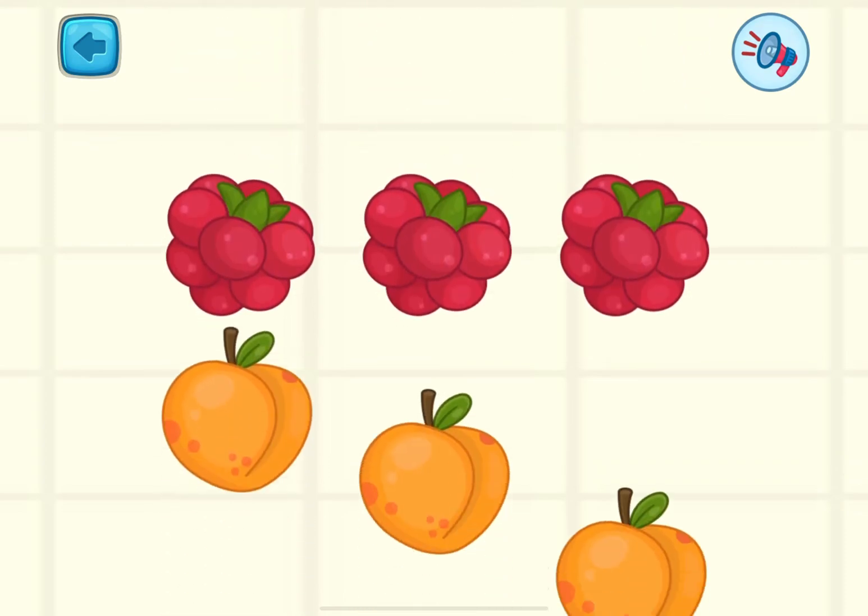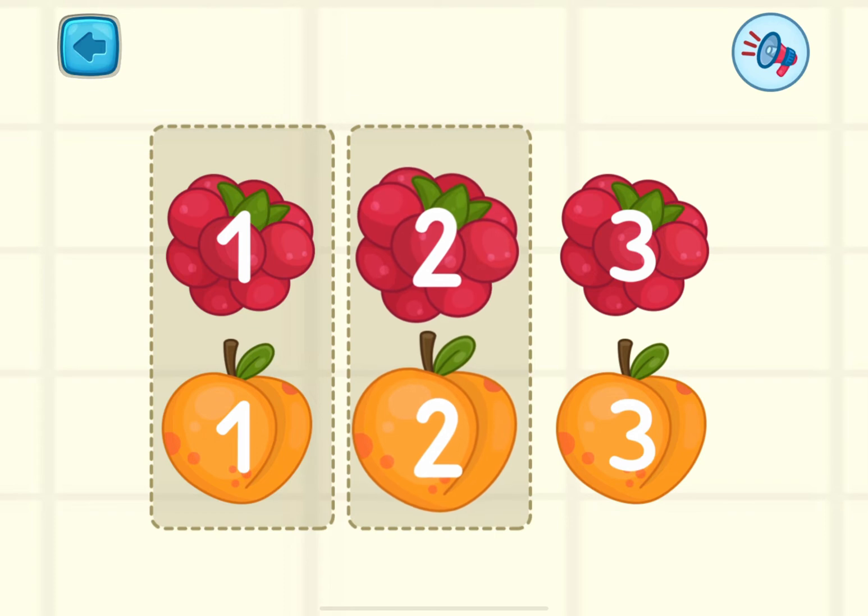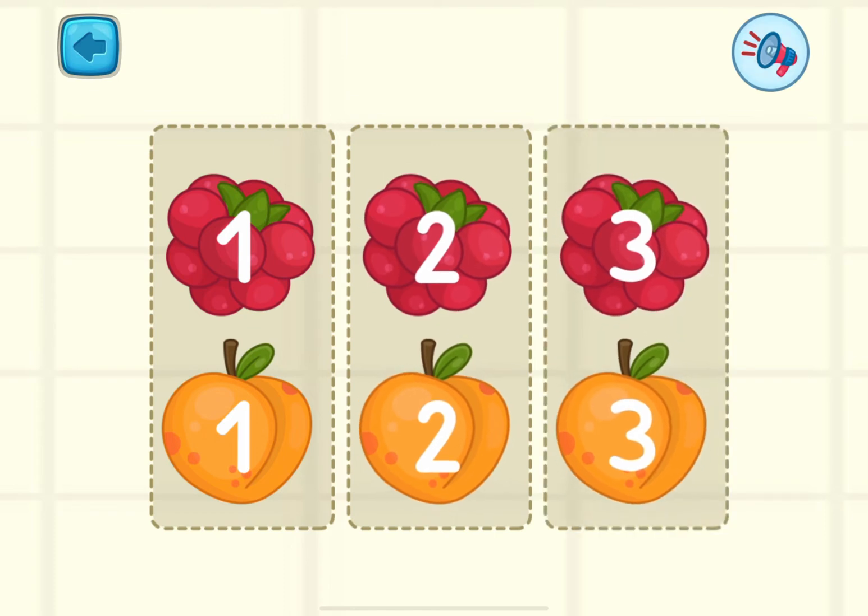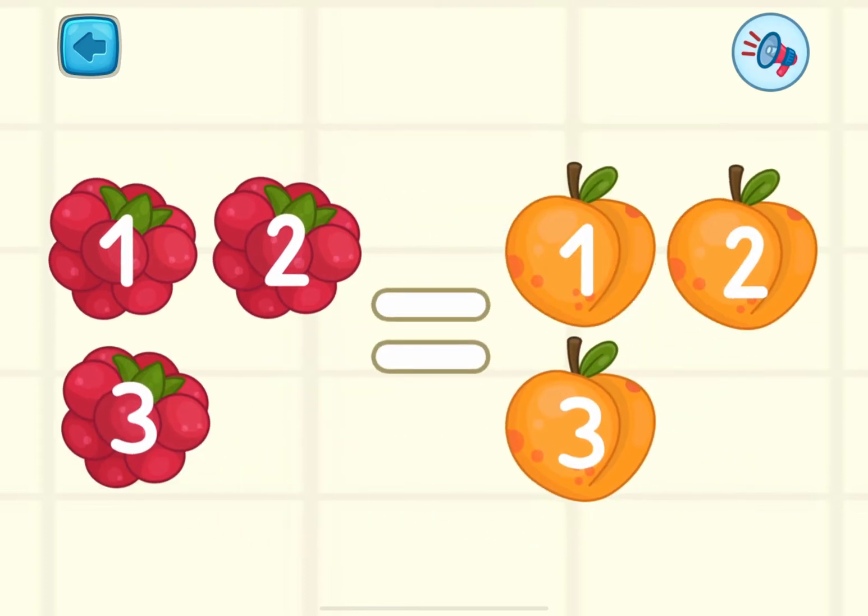Let's take a look at the last example. Imagine that we have three raspberries and three peaches. What do you think? Are there more raspberries or peaches? Let's find a pair for each item again. We see that there are pairs for all raspberries and peaches, and this means that the number of raspberries is equal to the number of peaches.